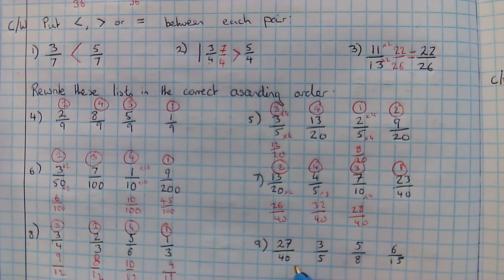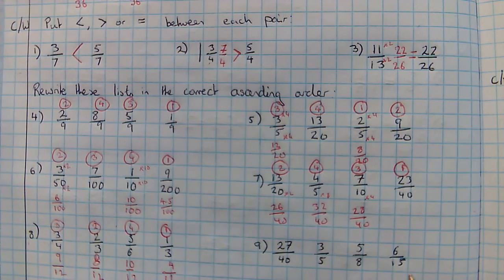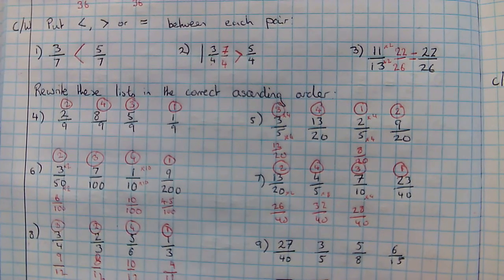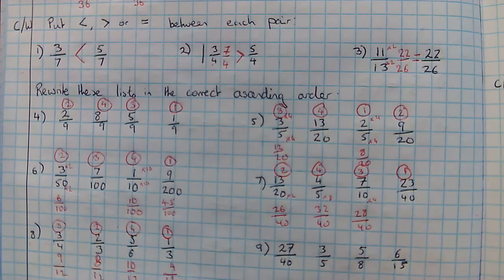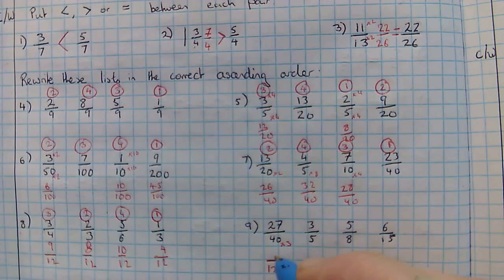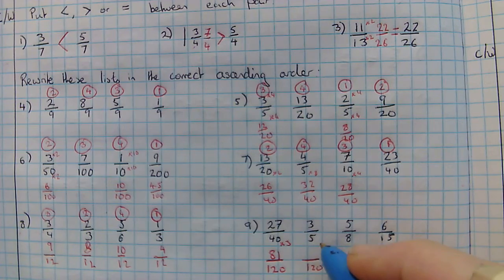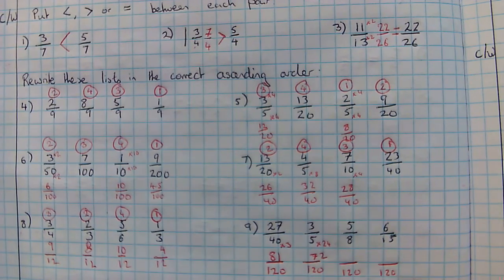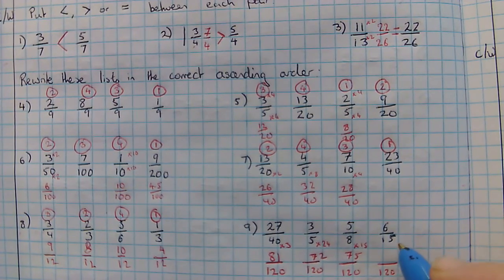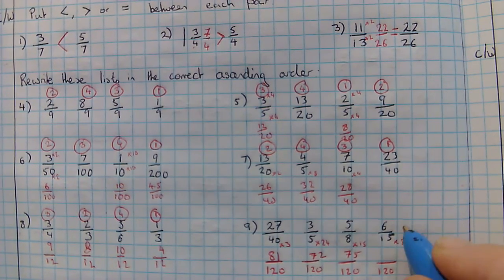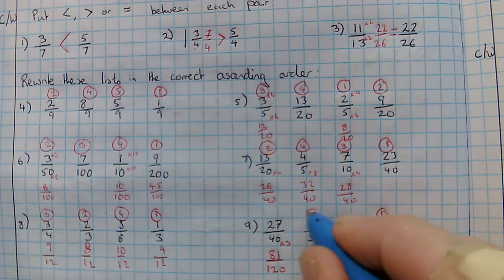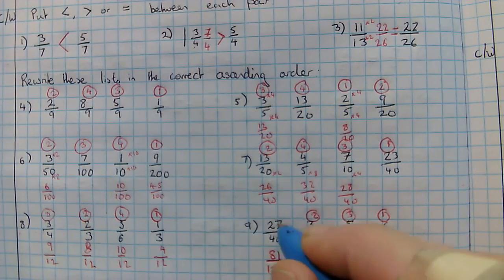Last one. Forty is my biggest denominator. Fifteen doesn't go into forty, so go up to eighty — fifteen doesn't go into eighty either. The first number that everything goes into is a hundred and twenty. Forty into a hundred and twenty, I would need to times by three. Twenty-seven times by three is eighty-one. Five into a hundred and twenty is times by twenty-four. Three times twenty-four gives me seventy-two. Eight into a hundred and twenty is times by fifteen. Five times fifteen is seventy-five. And fifteen into a hundred and twenty is times eight. Six times eight is forty-eight. So the smallest number is six out of fifteen, followed by three-fifths, followed by five-eighths, followed by twenty-seven out of forty.